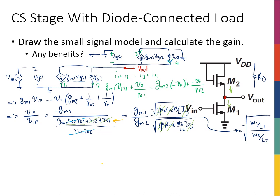So answering the question of benefits: the gain is set purely by the geometry of the two devices. This means changes in temperature, process variation, or supply voltage do not affect the gain. This is very desirable when you want a robust, predictable gain. Once you set the widths and lengths of the transistors, you've essentially set the gain of the circuit.